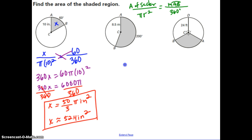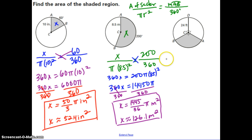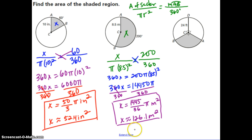Pause and try the second sector problem. When you set up your proportion and solve for x, the exact answer is 1,445 over 36 times pi meters squared, or approximately 126.1 meters squared.